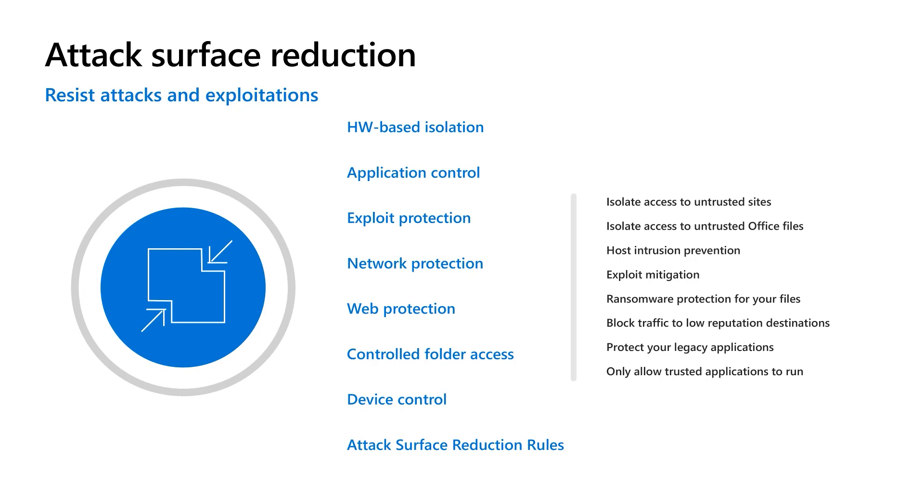Last three — controlled folder access. This is the ability to only allow known and trusted applications to write to your protected folders on your device. In the scenario of ransomware, where you download ransomware.exe — it's generally not well known, generally not trusted — it's going to try to encrypt your entire MyDocs folder. This will stop that from happening. You can define the local folders you want to protect and allow apps through as you see fit through policy. If it's not known and not trusted, it won't write to your protected folders.